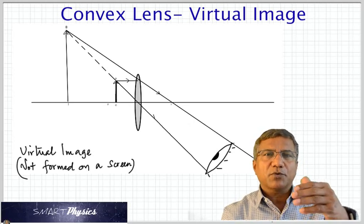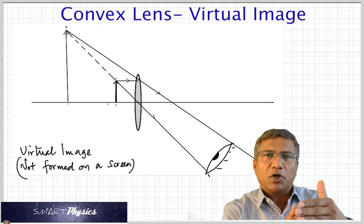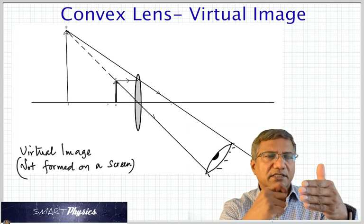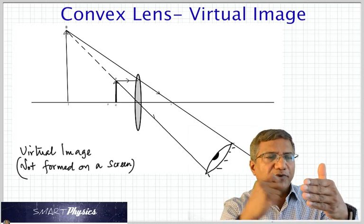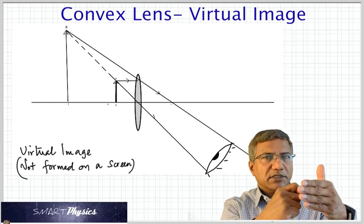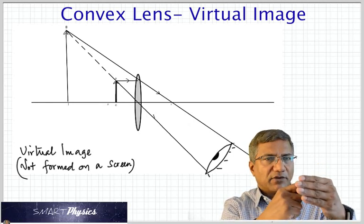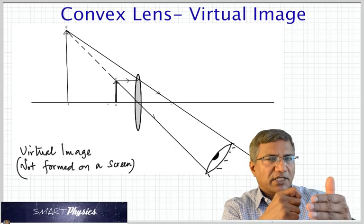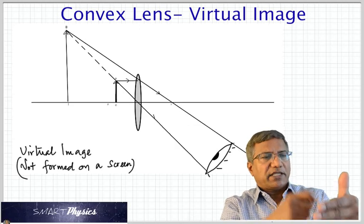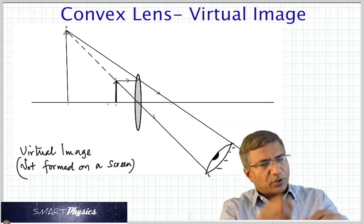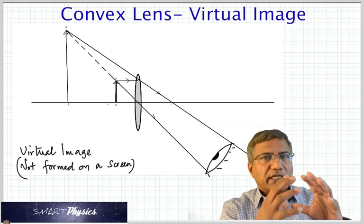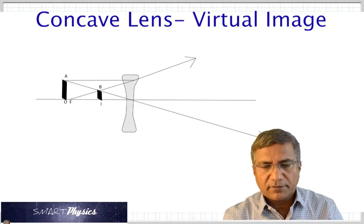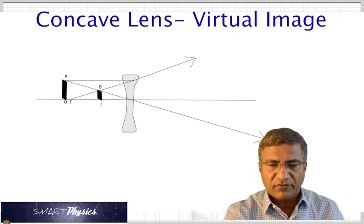Obviously, this is how we use the convex lens as a magnifying glass. If you want to read text that is really small, like small print, you have to hold the lens very close to the print in such a way that the object — which is the print — is inside the focal point. So it should be very close, and then when we look, we see the print bigger and upright.